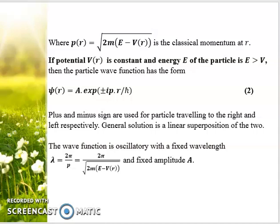In the first case, when potential is constant and energy E is greater than V, the incident particle has kinetic energy more than the given potential. The wave function takes the form ψ(r) = A exp(±i p·r/ℏ), where plus and minus signs are for particles traveling to the right and left respectively. The general solution is the linear superposition of the two. The wavelength is λ = 2π/p = 2π/√(2m(E-V(r))). The wave function is oscillatory with fixed amplitude A.